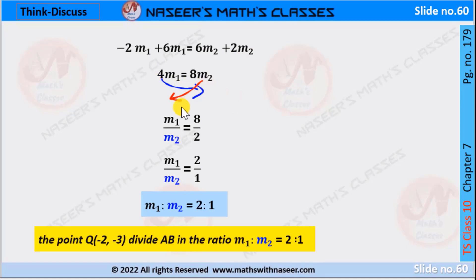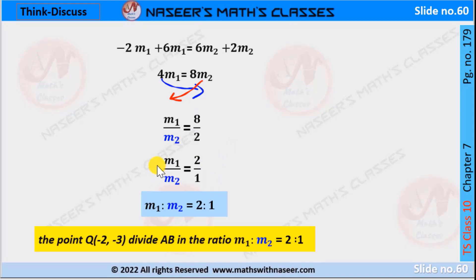Now to find M1:M2 we transpose M2 from RHS to denominator of LHS and 4 from LHS to denominator of RHS. Then M1/M2 = 8/4. Cancelling, we get 2/1. Therefore M1:M2 = 2:1. The point Q(−2,−3) divides AB in the ratio M1:M2 = 2:1.